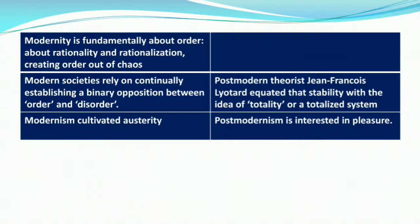Modernity is fundamentally about order, about rationality and rationalization — creating order out of chaos. Modernism always talks about order, which is why it maintains binary oppositions between order and disorder. Modern societies rely on continually establishing this binary opposition. Postmodern theorists like Jean-François Lyotard equated that stability with the idea of totality. Instead of binary oppositions, he argues that order and disorder are found in one whole, totalized system. So postmodernism is interested in pleasure rather than cultivating austerity in society. Thank you very much.